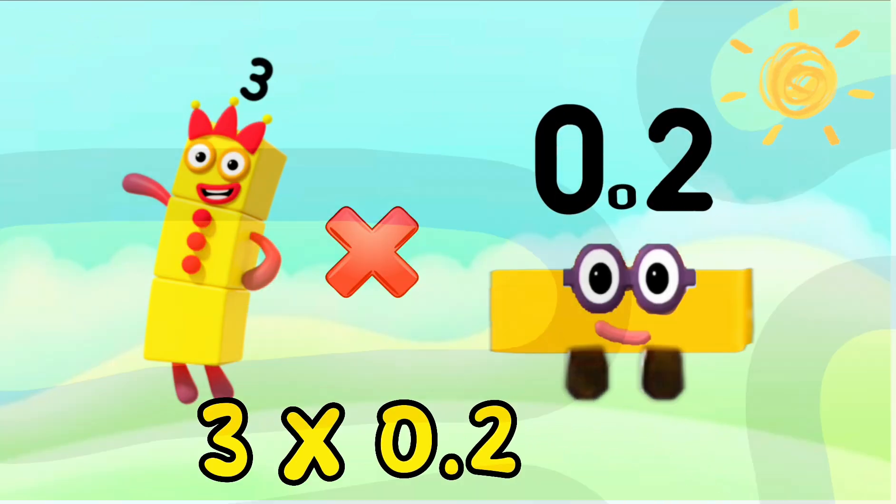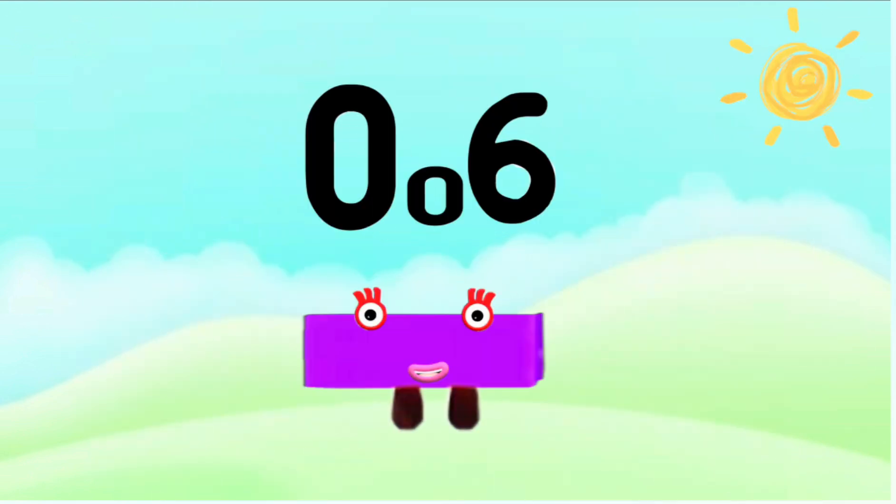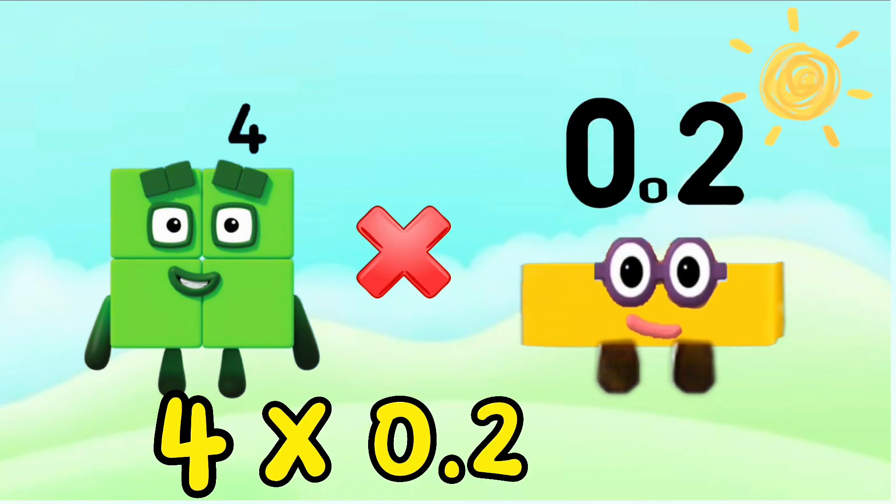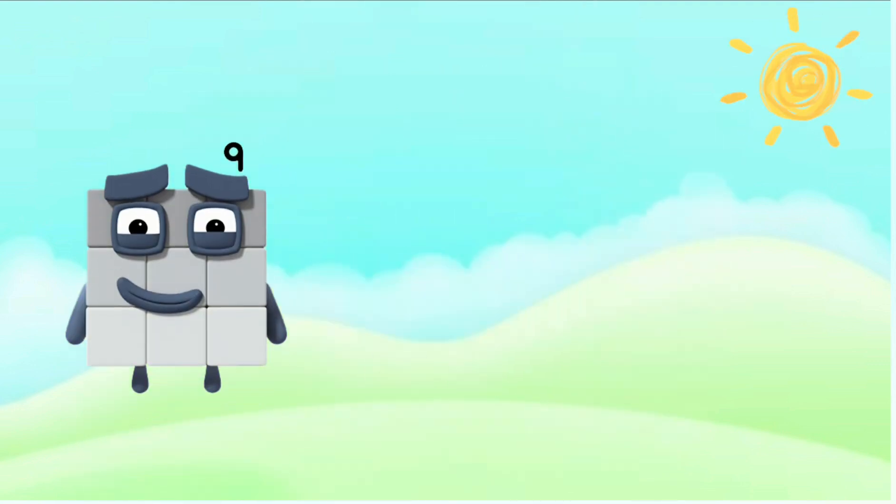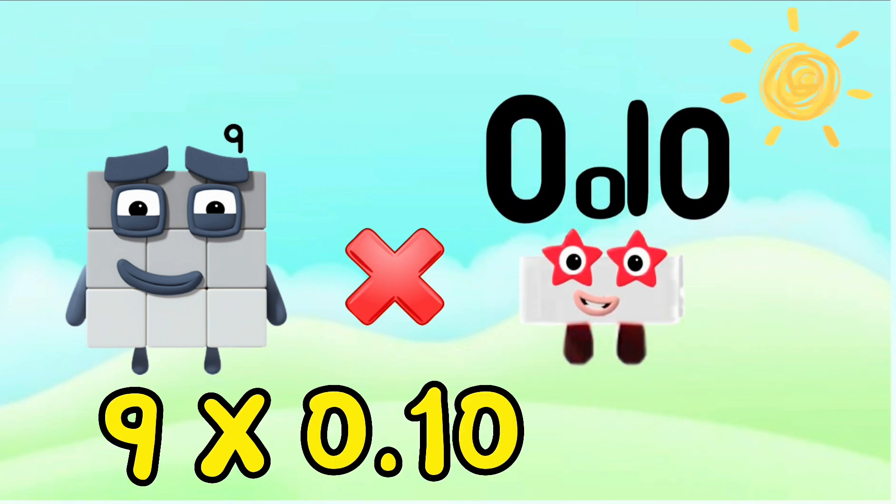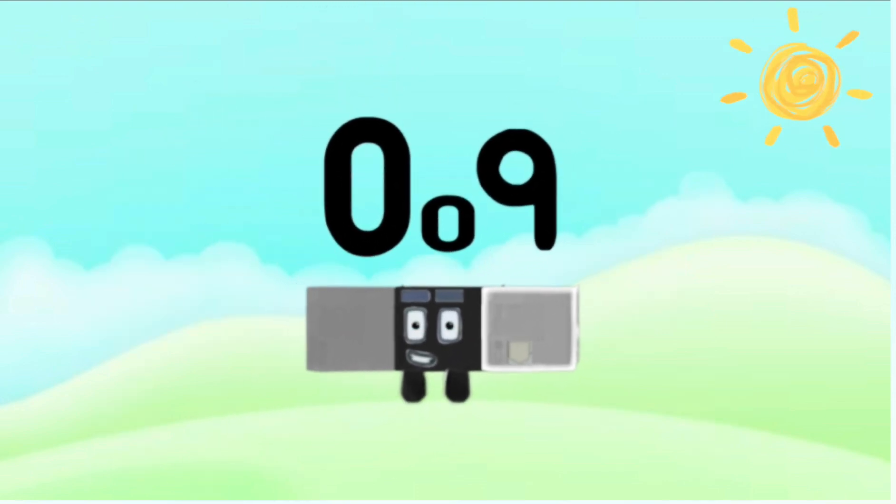...equals 0.6. 4 multiplied by 0.2 equals 0.8. 9 multiplied by 0.10 equals 0.9.